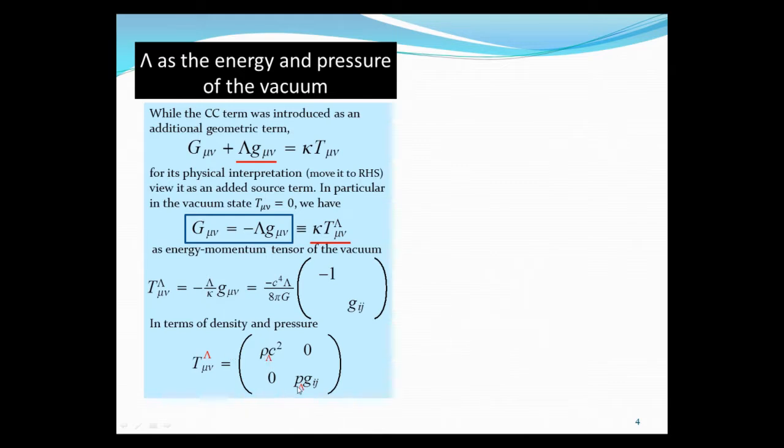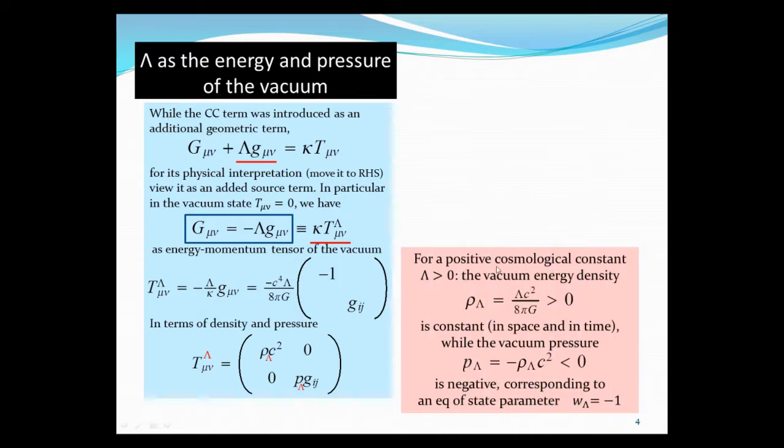Therefore, we have an expression for positive lambda. The vacuum energy density equals lambda c squared over 8 pi G, which is positive, a positive constant. It's constant in space and in time. No matter how you change the volume, it's still the same density. The vacuum pressure equals minus the vacuum energy density. Therefore, it has the equation of state parameter exactly equal to minus 1, as we were talking about.